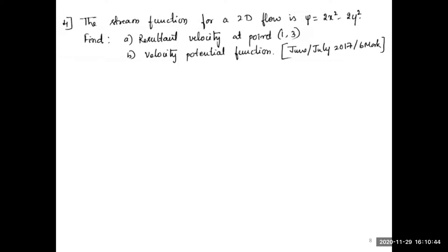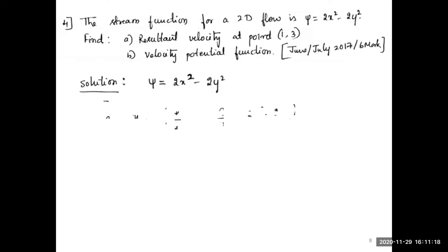The given stream function is ψ = 2x² − 2y². We have to calculate the resultant velocity V = √(u² + v²) at point (1, 3), where x = 1 and y = 3. We also need to find the velocity potential function φ. First, we calculate the velocity components u and v at point (1, 3) using the stream function.